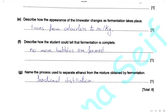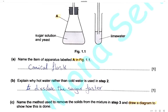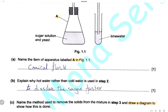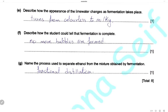Describe how the student could tell that the fermentation is complete. When the fermentation is completed we cannot see any more bubbles of carbon dioxide gas in the lime water, which indicates that fermentation has stopped. So he can tell when no more bubbles are formed that the fermentation is complete.